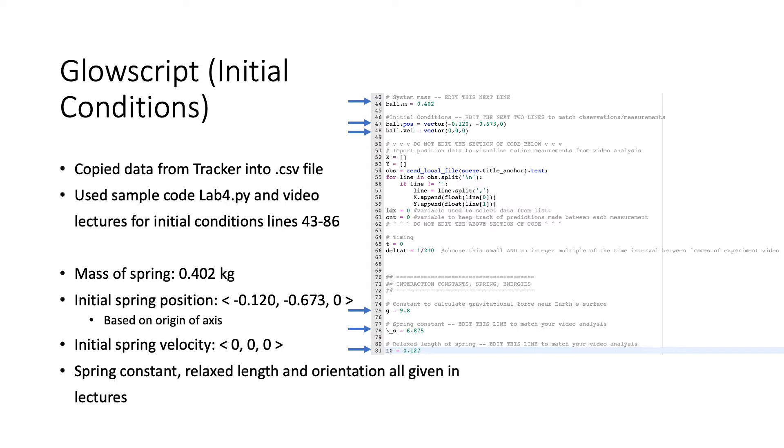Setting up Glowscript with initial conditions. Glowscript allows us to take a CSV file of all those data points found in Tracker and put them into a computer model to compare the two. I used the sample code from lab 4 along with other lectures to complete the initial conditions.